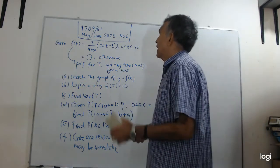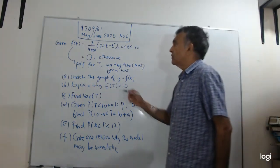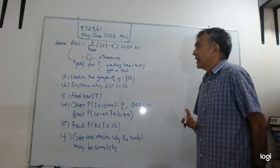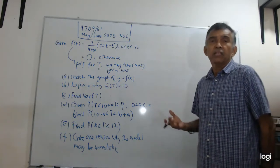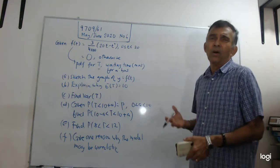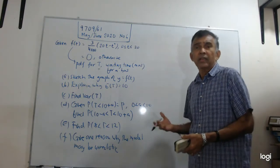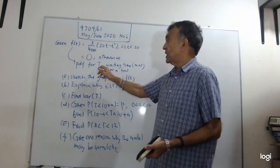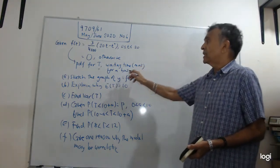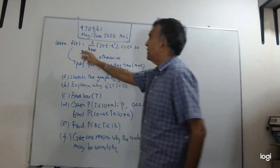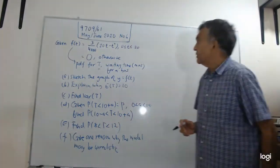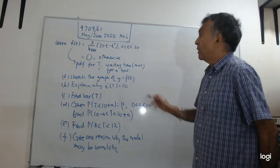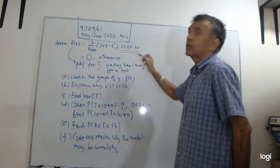Okay, this question is given the probability density function. The probability density function for T is given to us. T is the random variable. It represents the waiting time in minutes for a bus. I repeat, you can look up the details on the actual question paper, which is available on the Cambridge website. So again, this is PDF, probability density function for T, the random variable representing the waiting time in minutes for a bus.